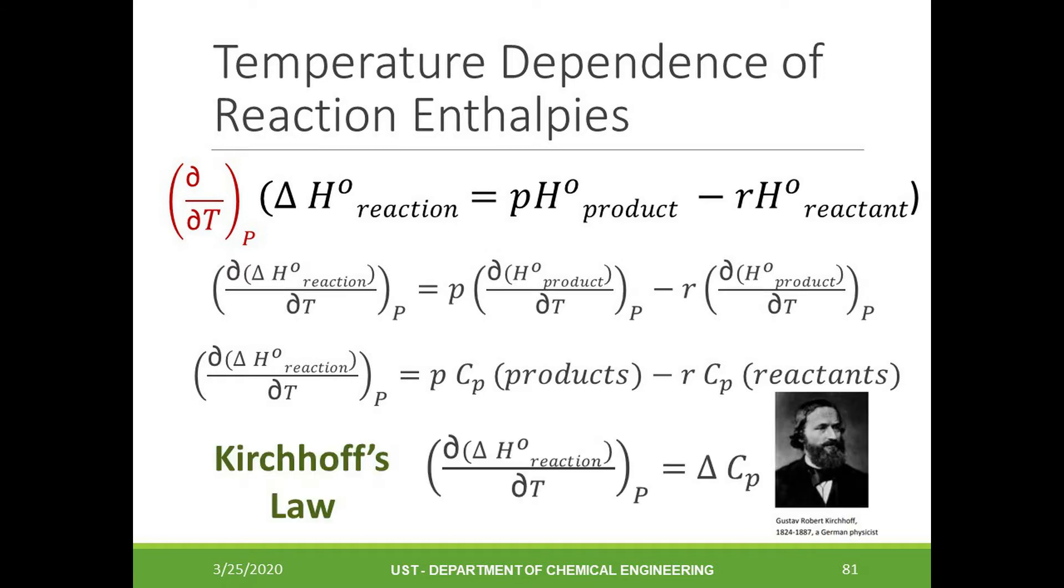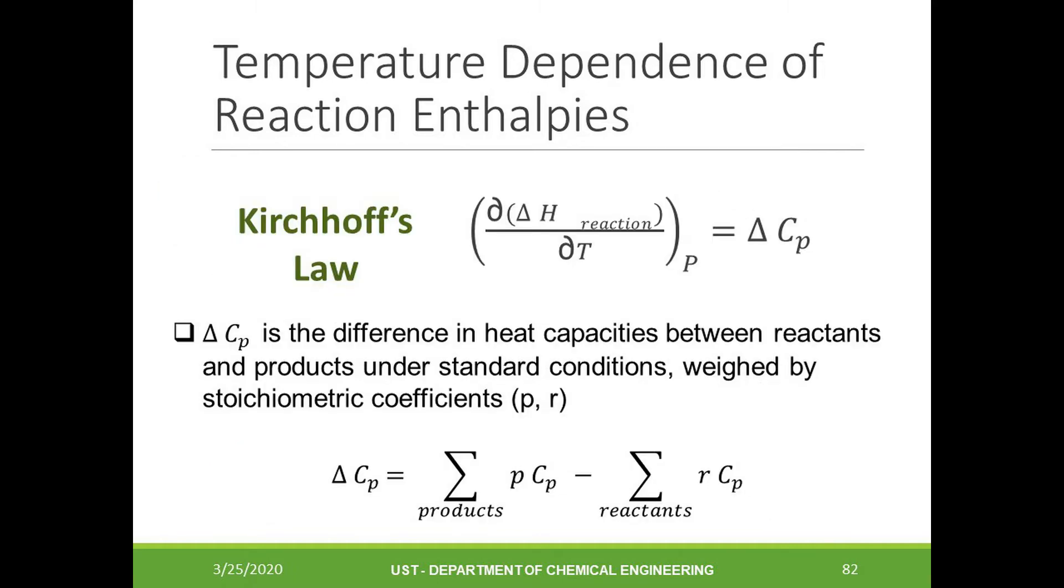Doing so will give the Kirchhoff's equation, which is named after Gustav Robert Kirchhoff. This equation states that the variation of the change in enthalpy of a reaction with temperature at constant pressure is equal to the change in the heat capacity of the system. To apply the Kirchhoff's equation, we have to do some rearrangements.